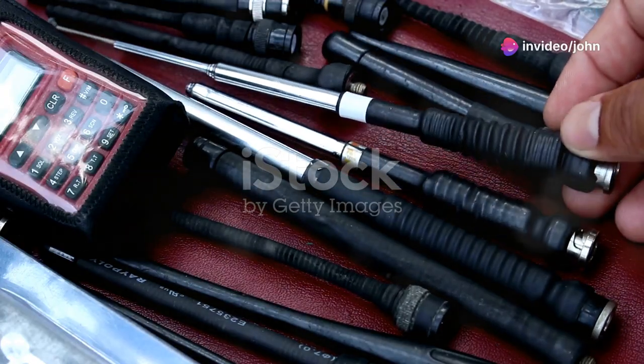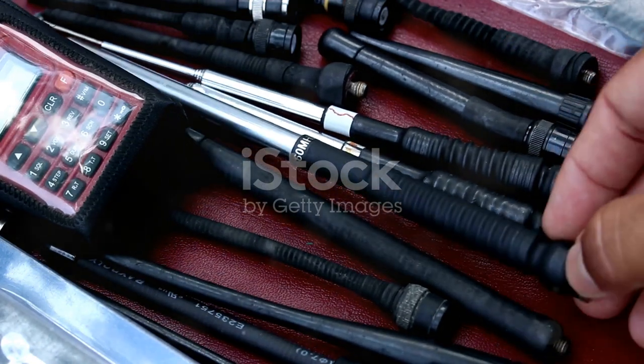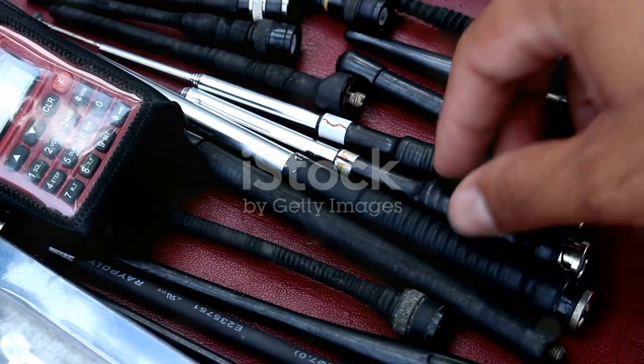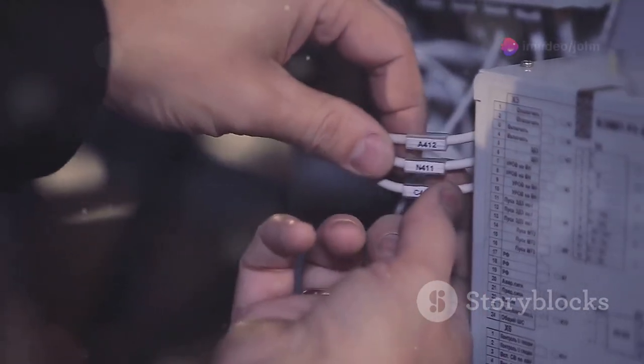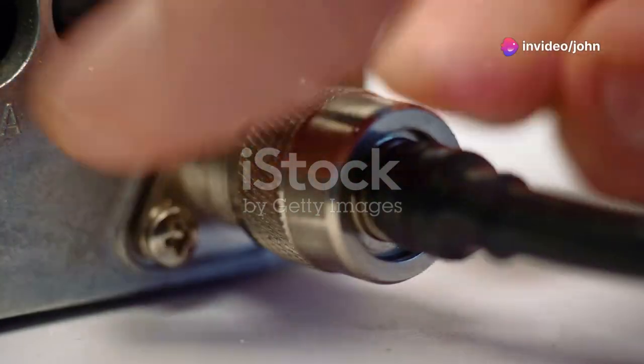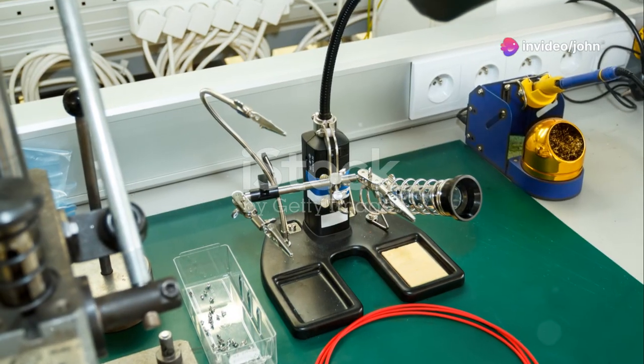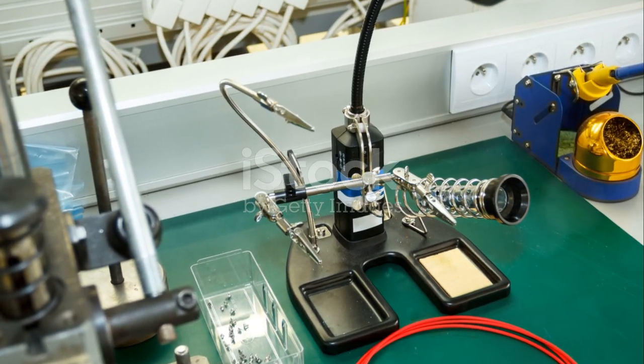You need 65.45 feet, or 19.94 meters of wire, a center insulator, two end insulators, coaxial cable like RG58, a coaxial connector PL259, rope or nylon cord, tools, wire cutters, soldering iron, and measuring tape.